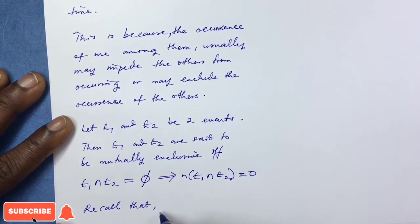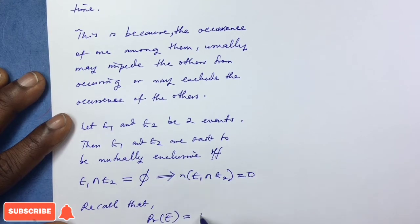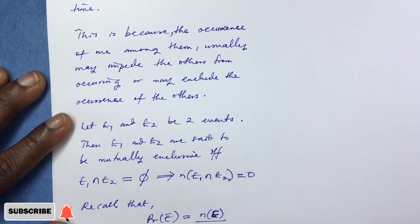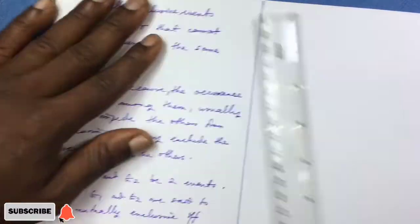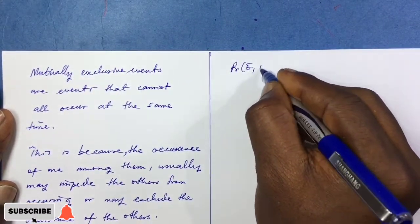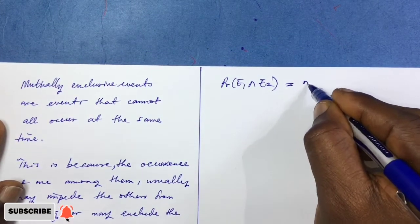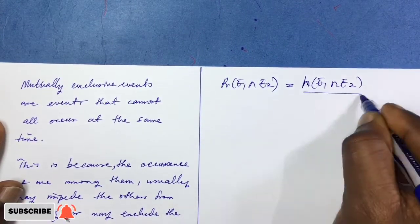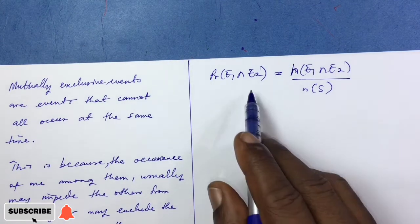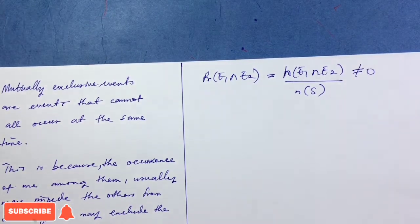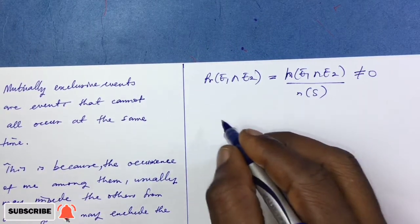Recall that by the set-theoretic definition of probability, the probability of an event is defined as the cardinality of that event divided by the cardinality of the sample space. With this in mind, the probability of E1 intersection E2, when E1 and E2 are not mutually exclusive, will not be equal to zero. If E1 and E2 are not mutually exclusive, then n(E1 ∩ E2) is not zero, so P(E1 ∩ E2) = n(E1 ∩ E2)/n(S) will also not be zero.